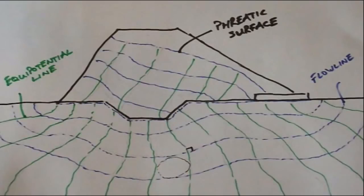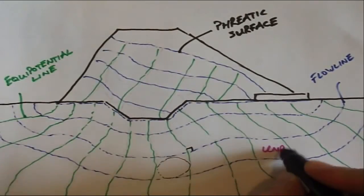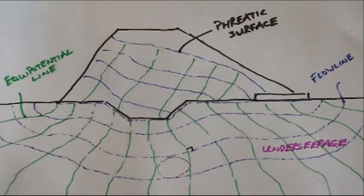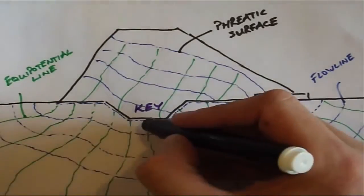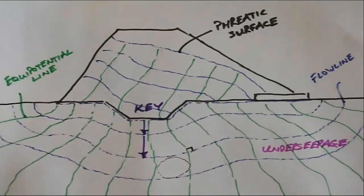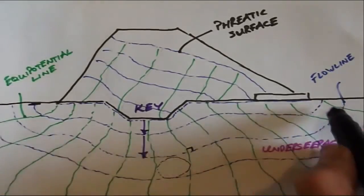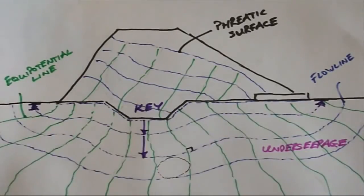Flow nets illustrate potential problem areas too. If the foundation soil is more permeable than the dam then the control of under seepage is essential. Under seepage can be virtually eliminated by means of a grout curtain or reduced by the addition of a low permeability key as we have here. The key pushes the subsurface flow deeper into the ground which, as you can see, increases the distance that the water molecules have to travel.